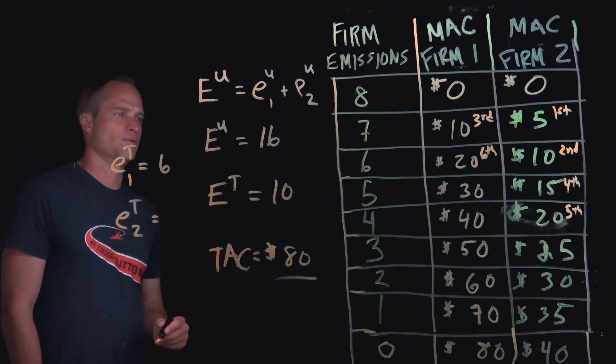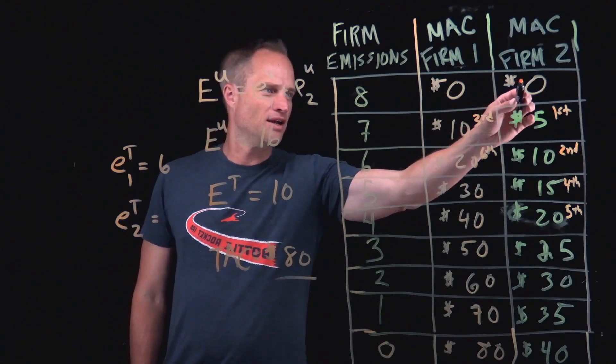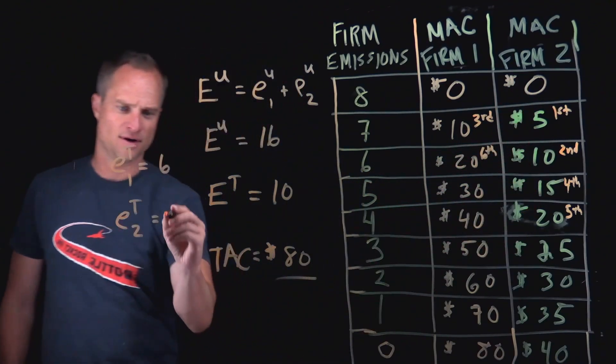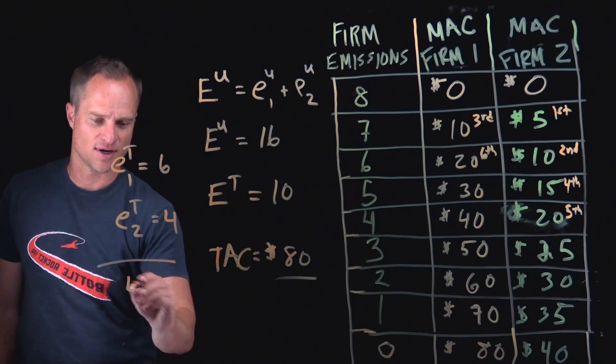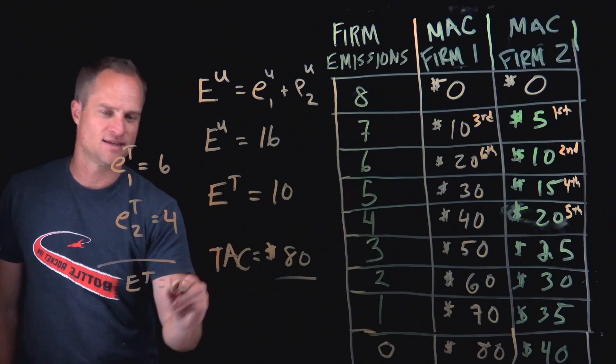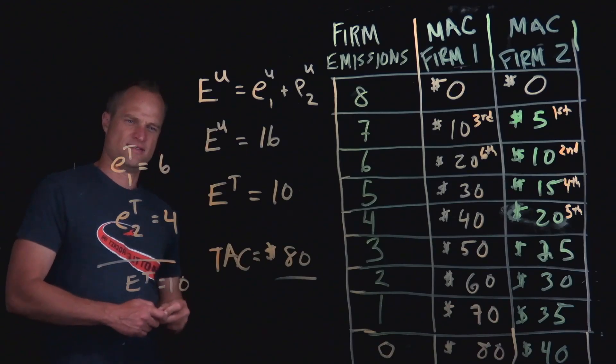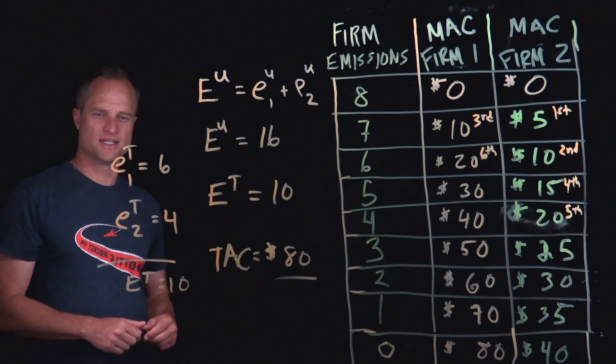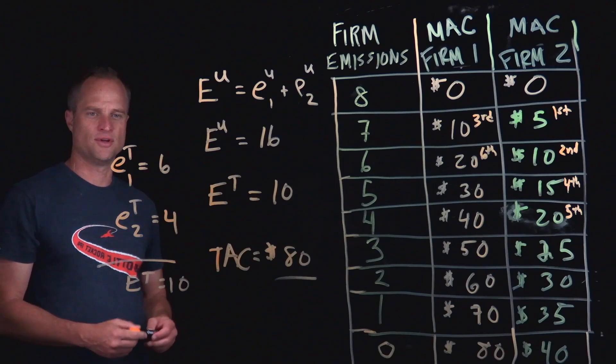we know would be abating the four units. So it moves from seven, six, five, four. And so that's how we're getting to our E^T of 10 is that that would require the emissions level for firm one to be six, the emissions level for firm two to be four.